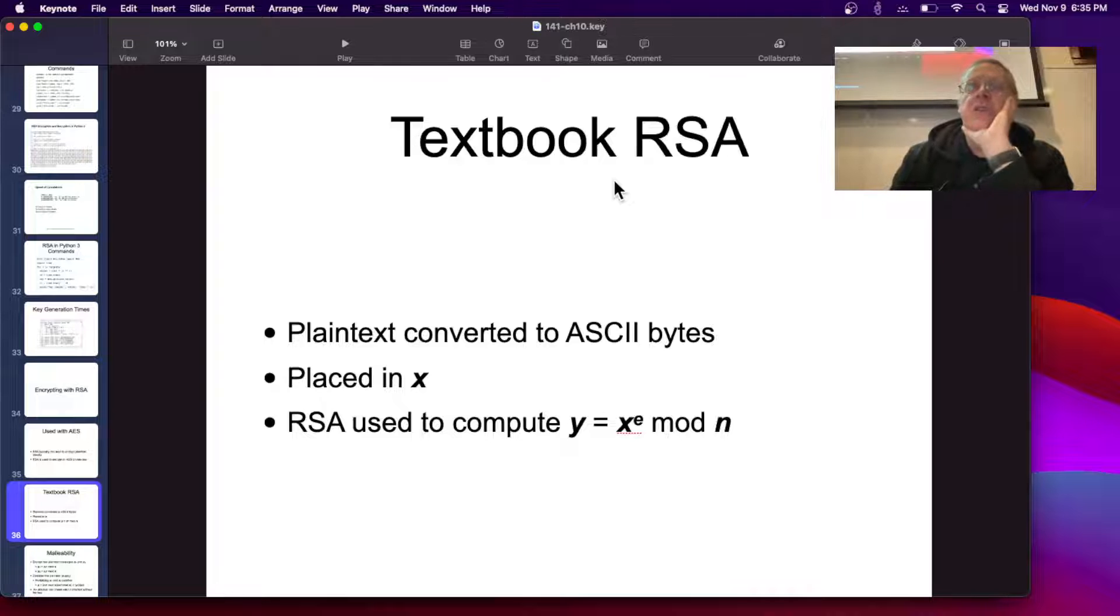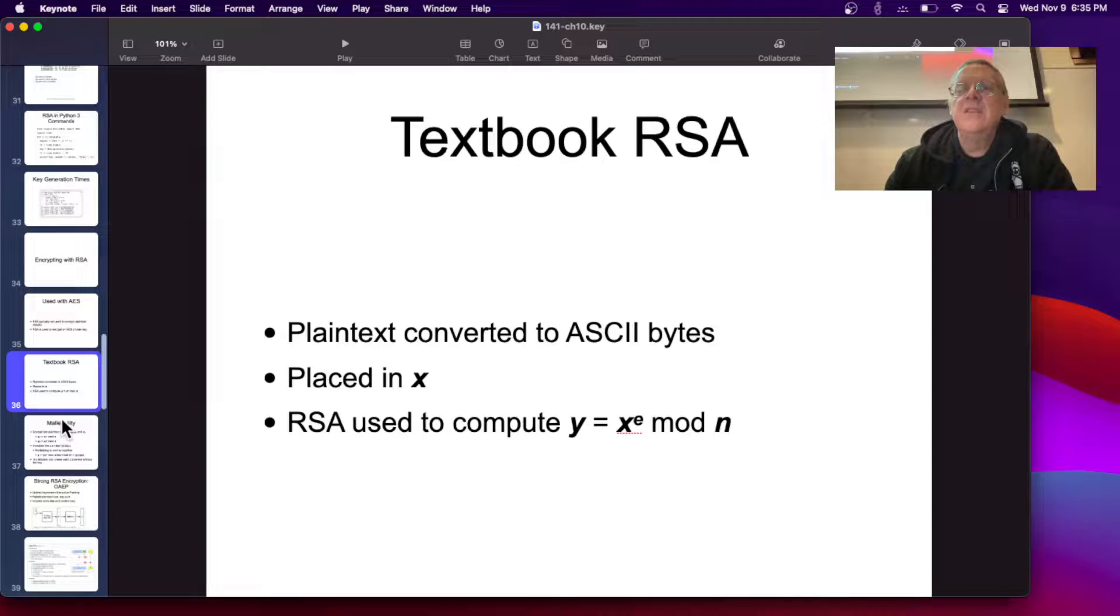So, textbook RSA, which is what we're using in the simple projects here, you convert your plain text to ASCII bytes. That's a number. You can read it in hexadecimal, interpret it as a number, and put it in X, and then calculate X to the E mod N to get another number. That's textbook RSA.